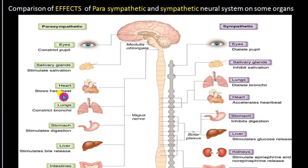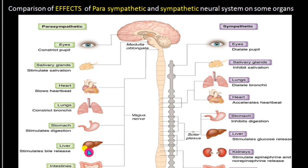During the resting period, the trachea and bronchi will be constricted as more oxygen is not needed. Digestion in the stomach will be stimulated, bile release occurs in the liver, peristaltic movement in the intestine will be stimulated, the bladder will contract, and urine will be released during the resting position.